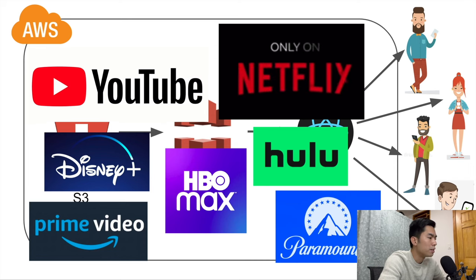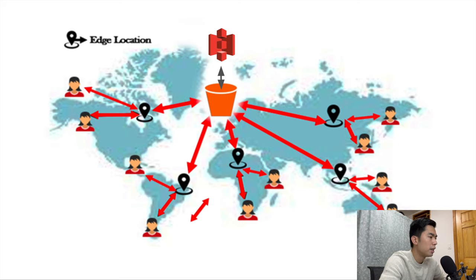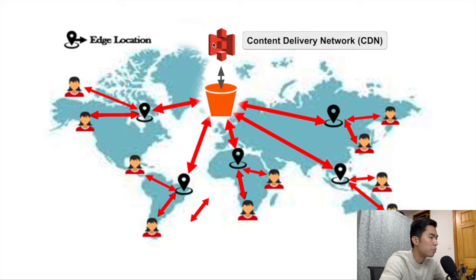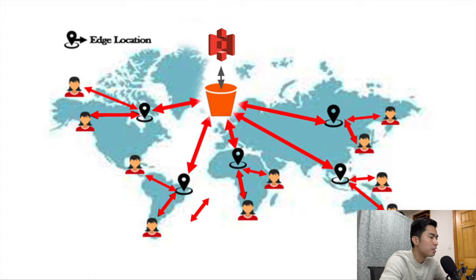Before we get to the demo, let's talk about CloudFront. CloudFront is a content delivery network CDN service within AWS that has a lot of edge locations around the world. They're connected by AWS's in-house backbone network that can deliver data between them with very low latency, and that's what makes the streaming fast.